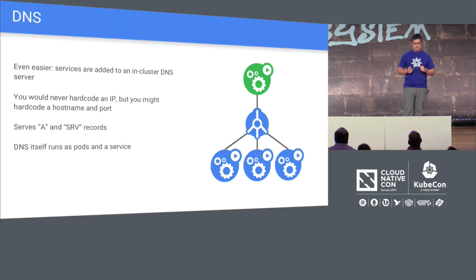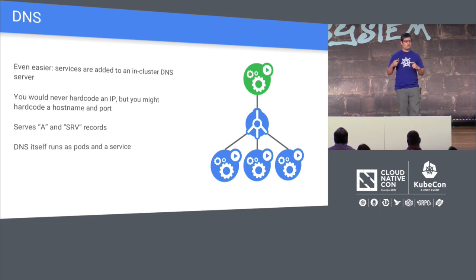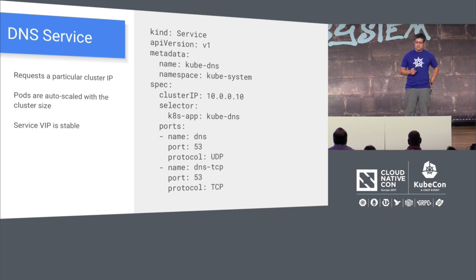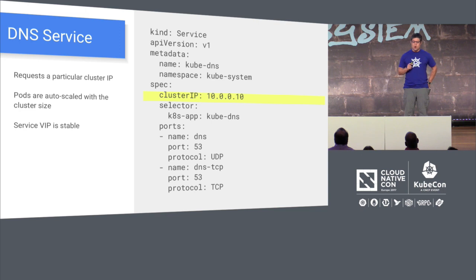DNS is just another service. Every time you create a service, it gets a DNS name of its own. So you don't have to hard-code that IP address into your source code — instead, you hard-code the service name and know that once the service is created, it can find all associated pods just by hitting the DNS name, served as an A or SRV record. DNS itself runs as a pod and a service of its own. For Kubernetes, we've done an implementation to autoscale it — the bigger the cluster gets, the more DNS services are sprinkled around. DNS is oxygen, and none of us like it when a DNS request takes a long time.